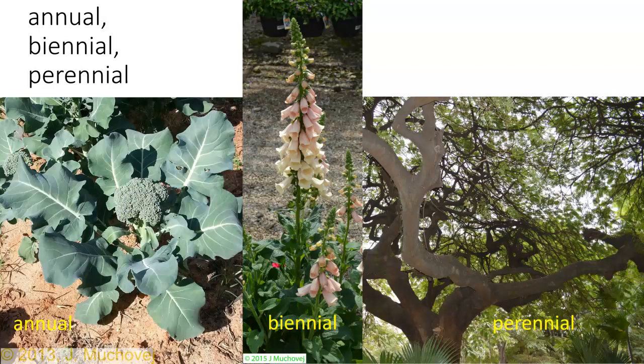When that flower meristem produces the flowers, all of a sudden you've got nothing else to produce leaves. On the biennial, it was down as a basal rosette growing one year, producing new leaves, and then all of a sudden the meristem got changed into a flower meristem and the stalk came up — but it doesn't come back after that because it used up its meristem.